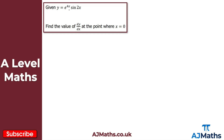Moving on to question 2: y equals e to the 4x multiplied by sin 2x, and we're asked to find the value of dy/dx at the point where x equals zero. Because we have a product of functions, we use the product rule. I define u as e to the 4x, and v as sin 2x.